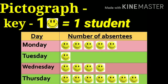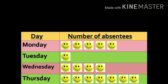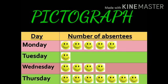Here, this pictograph has a title, 'Number of Absentees', which tells us that the pictograph is about the number of students absent. The label gives us the information of days on which the number of students were absent. And the key tells us that each picture of a smiley is equal to one student. Let us learn how we can read this pictograph. The given pictograph shows the number of absentees in the class during the week.